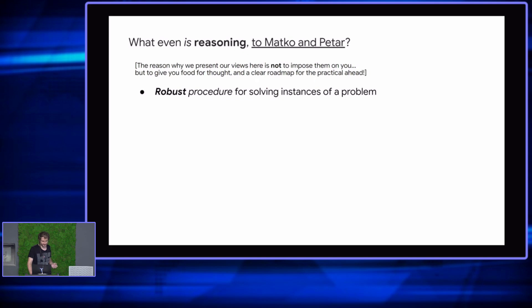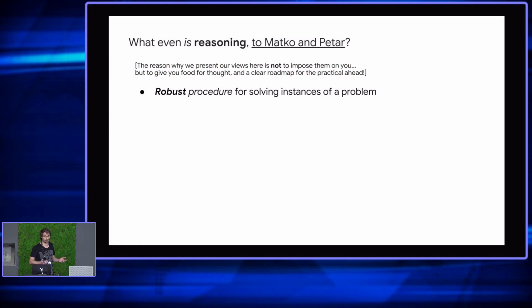We look at reasoning as a robust procedure for solving instances of a problem — robust in the sense that it should apply to multiple instances of the same problem and shouldn't fail at certain things. When you're doing logical reasoning, you're doing it in the space of problems solvable by logical reasoning. We know inductive, deductive reasoning, and also abductive reasoning, which is when you're kind of forced to make a conclusion — almost a wild guess. And sometimes that works. But that's more or less what LLMs today are kind of doing.